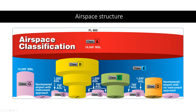Below class A, you'll see the blue section — that's class E airspace. You can think of class E as the 'everywhere' airspace. If it's not designated on the chart and it's not right on the ground, it's probably class E airspace.